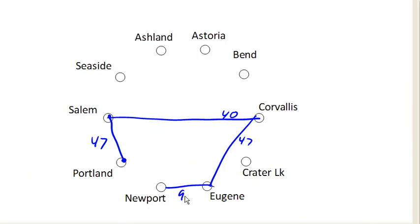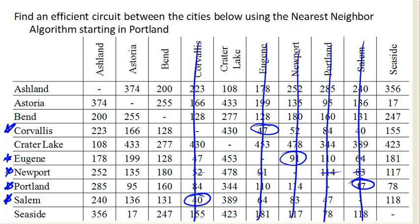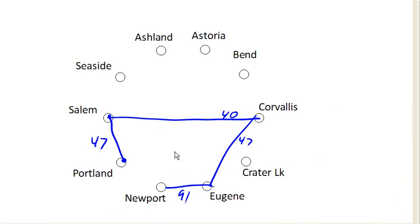From Newport, let me keep better track of visited cities: we've already been to Corvallis, Eugene, Newport, Portland, and Salem — so I won't visit any of those again. Right now I'm in Newport, and of my remaining choices, the cheapest is Seaside at 117 miles. So from Newport, we're going to go to Seaside, which is 117 miles away.